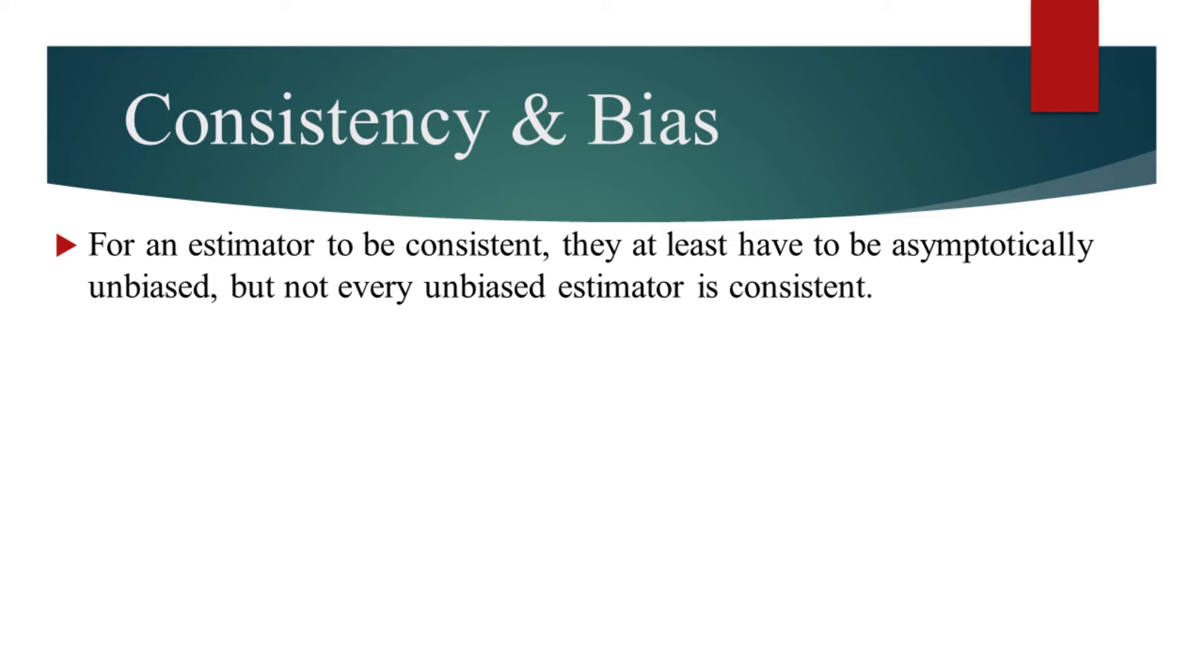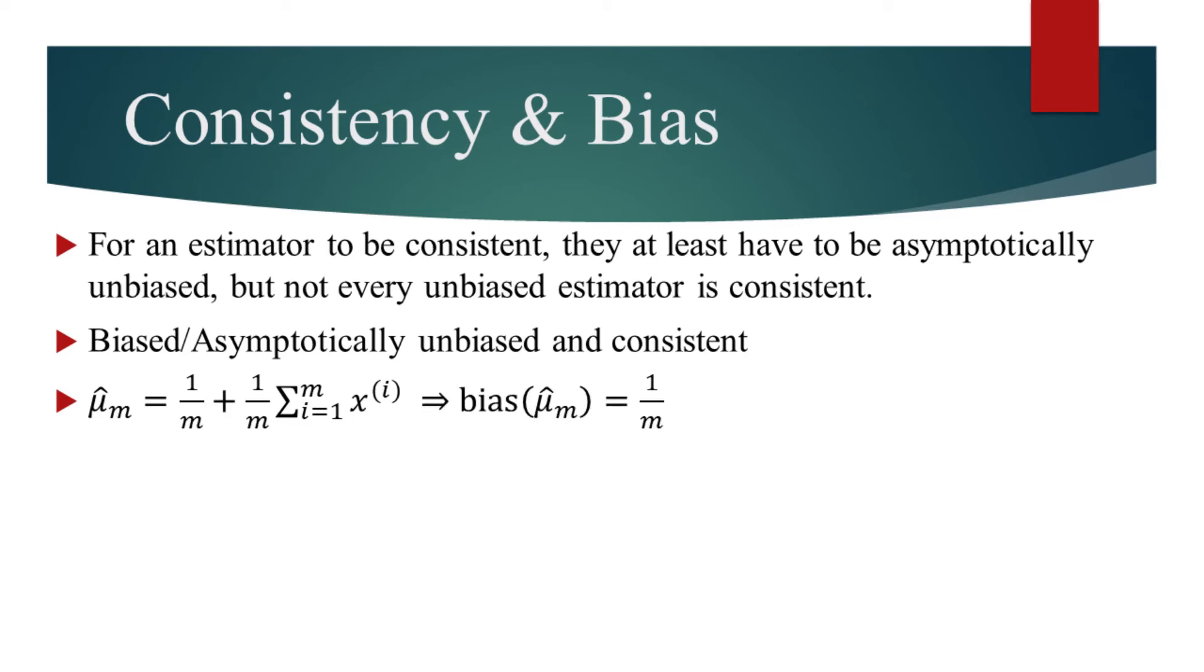For example, let's consider an estimator which is biased, asymptotically unbiased, and consistent. Sample mean is a consistent estimator with no bias. So if we add one over M to it, we will get an estimator with bias one over M. But as the number of samples approaches infinity, the bias will diminish, leaving only the unbiased and consistent part.